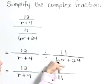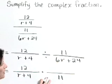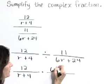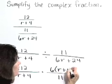This 6r plus 24 comes to the numerator and as we bring that up there, let's factor. Pull out the common factor of 6, let's write this as 6 times r plus 4.